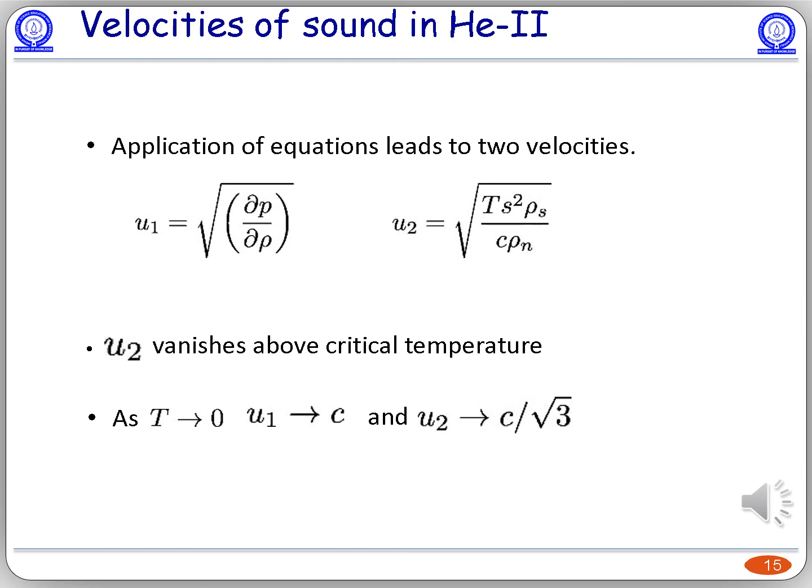The application of hydrodynamical equations for helium-4 fluid leads to the propagation of sound, and two velocities of sound are found in helium-4 below its lambda point. These are u1 equals square root of del p by del rho, and u2 equals square root of T s squared rho_s by c rho_n, where c is the specific heat capacity of the fluid. As temperature rises above the lambda point, u2 becomes zero since the density of the superfluid becomes zero, and we get only one velocity, which is the usual velocity of sound in a fluid. As T tends to zero, u1 tends to c and u2 tends to c by root 3.